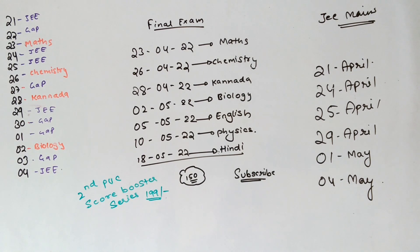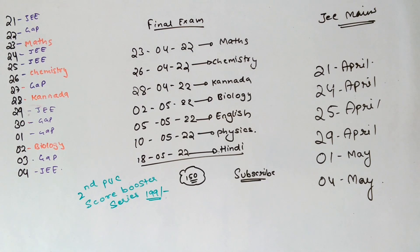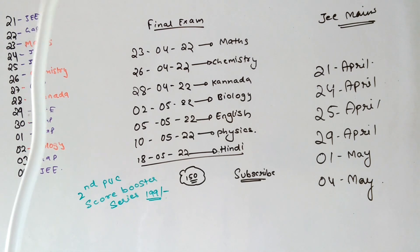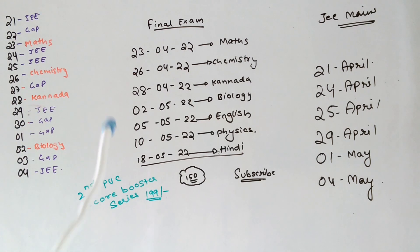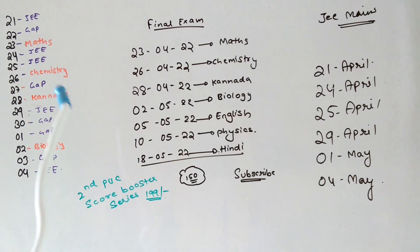First, second — the final exam is on the 20th. This is not the possibility. Basically, 22 is a gap, 23 is a math exam, 24 and 25 is a JEE, 26 is a chemistry exam, 27 is a gap, 28 is a Canada exam, and 29 is a JEE.